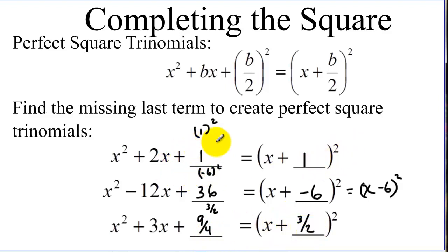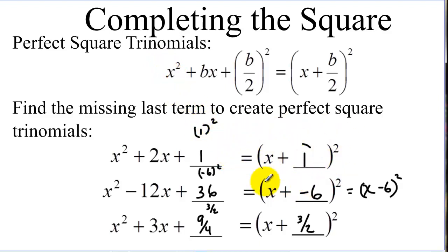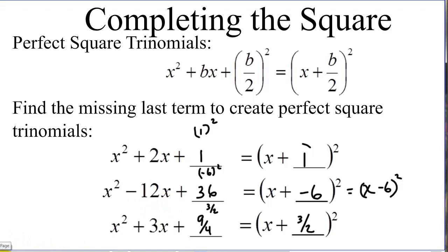So again, this process where we're adding a number to a trinomial — we are creating perfect square trinomials. We can then factor them and have something similar to our very first problem, which is easy to solve by taking square roots. Let's pull these couple of concepts together to use as a method for solving quadratics.